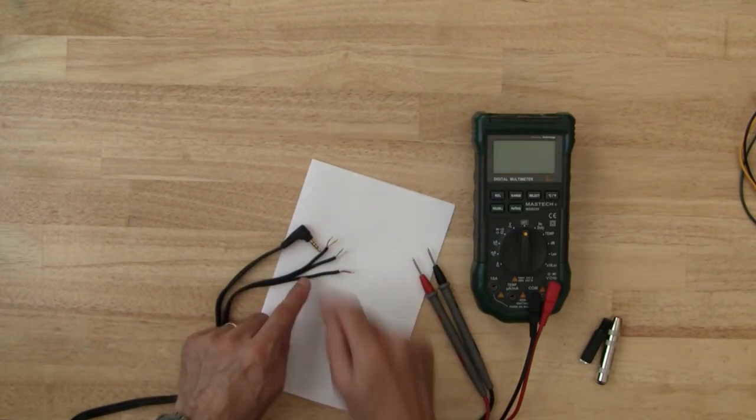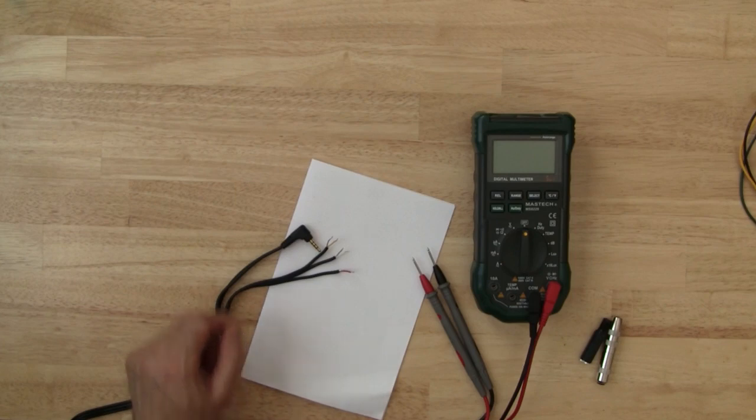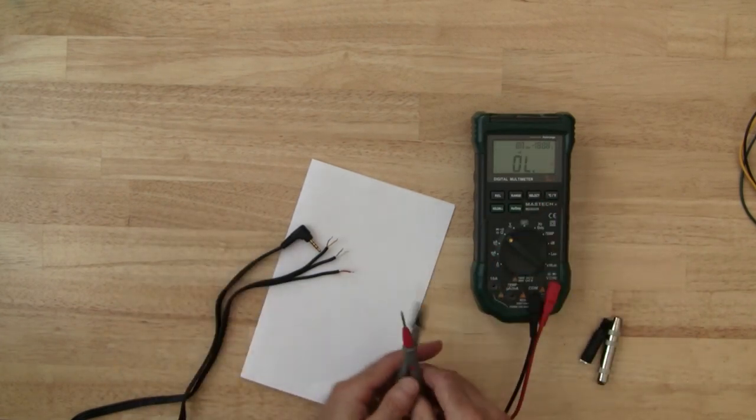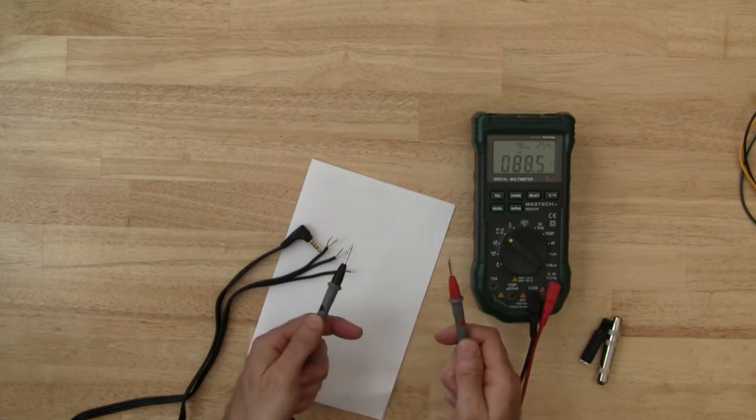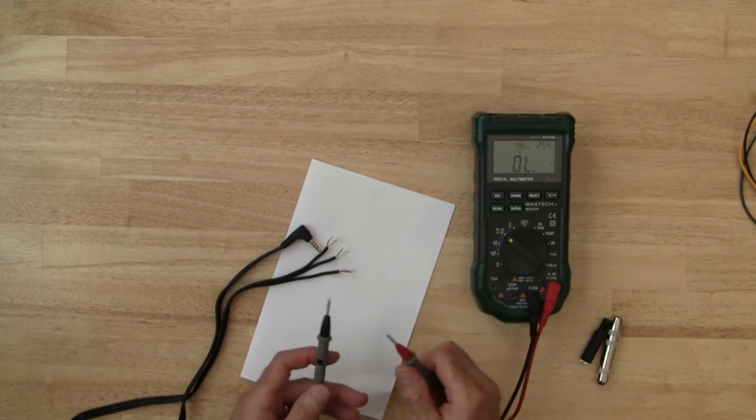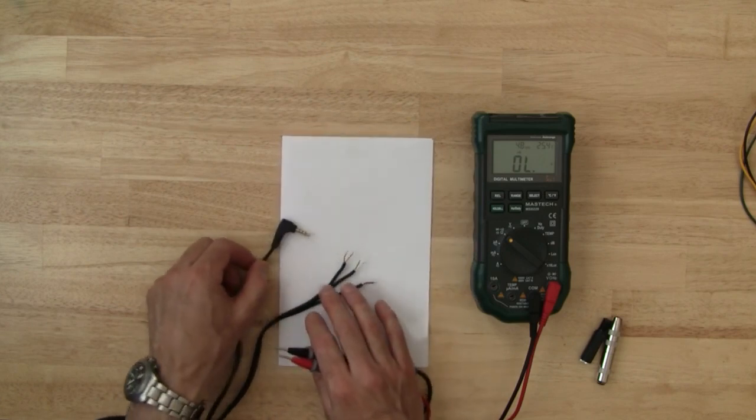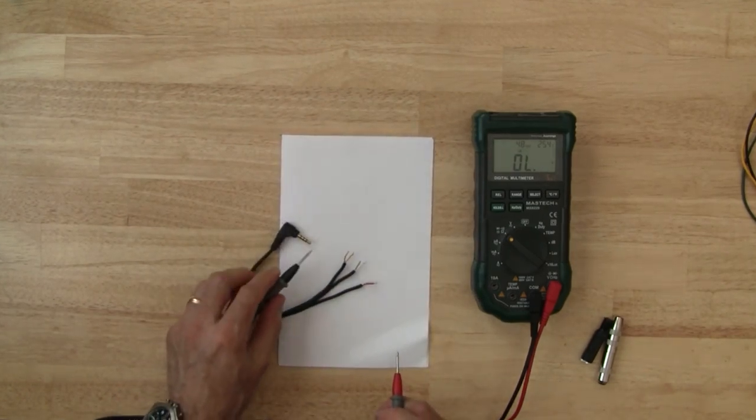If yours aren't you could just wrap some tape around the wires and label them. Now I'm going to use a multimeter in continuity mode so that it beeps when you make a connection. You could also just use resistance mode and look for zero resistance. And I'm going to check each of the tip ring and ring and sleeve to find out which wire they're connected to.